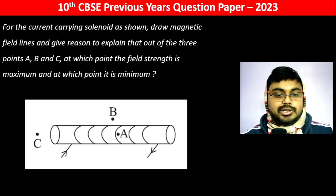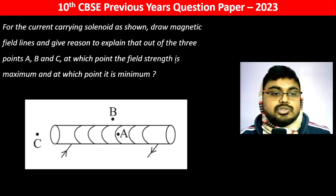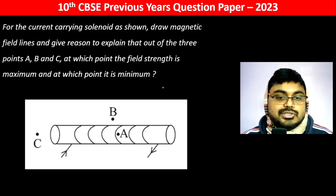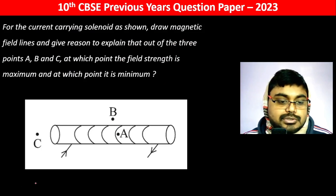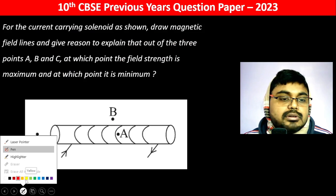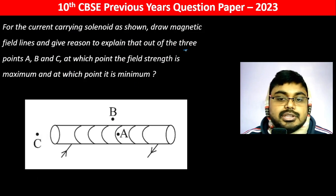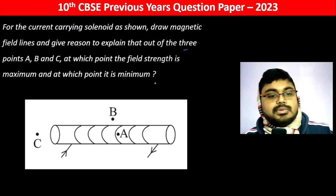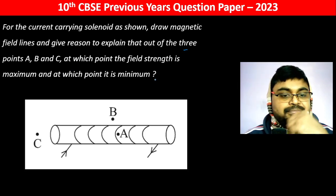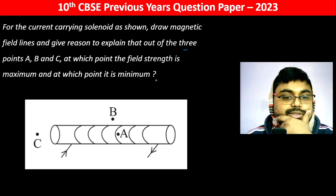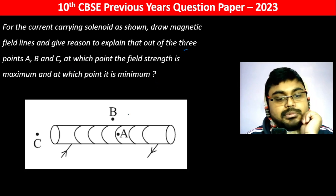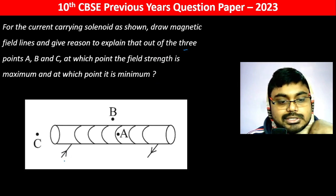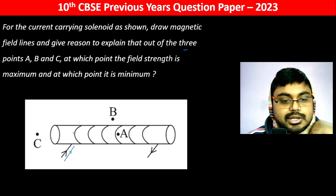The current-carrying solenoid as shown — draw the magnetic field lines and give a reason to explain it. Out of the three points A, B, and C, at which point is the field strength maximum and at which point is it minimum? The current is flowing as shown.